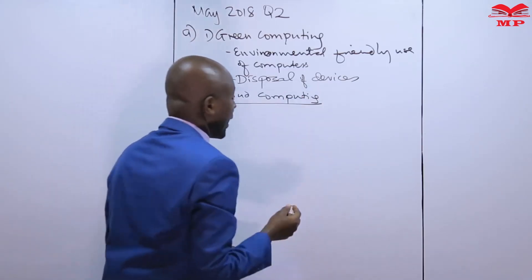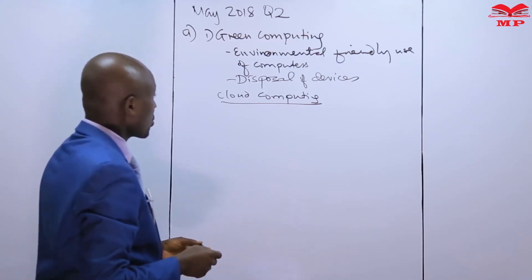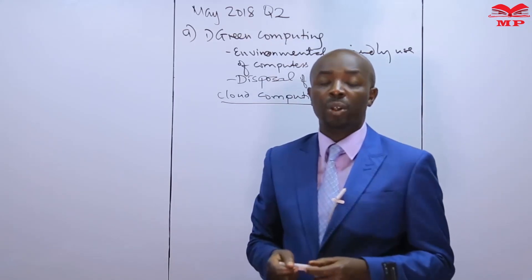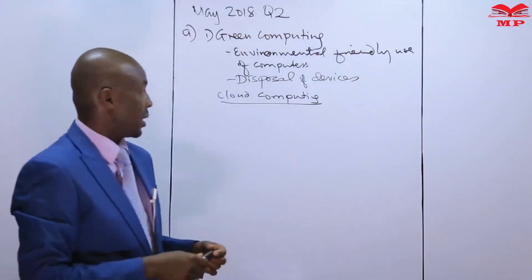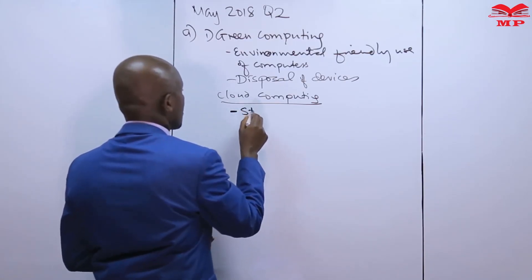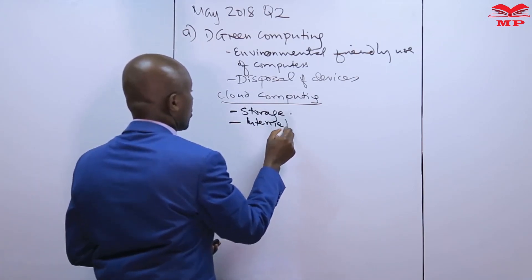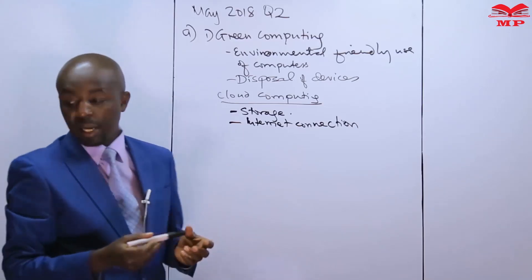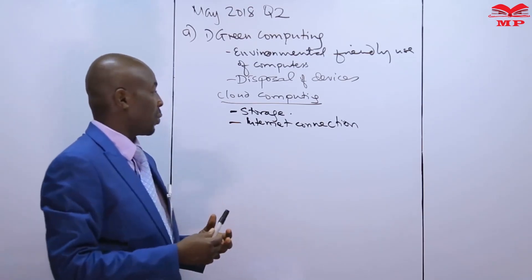Cloud computing — many times people say that we are storing our data in the cloud. Cloud computing talks about the use of the internet to access an organization's resources that are stored in another organization's server. In cloud computing, storage is a very important point in that definition, and we also have internet connectivity or connection.